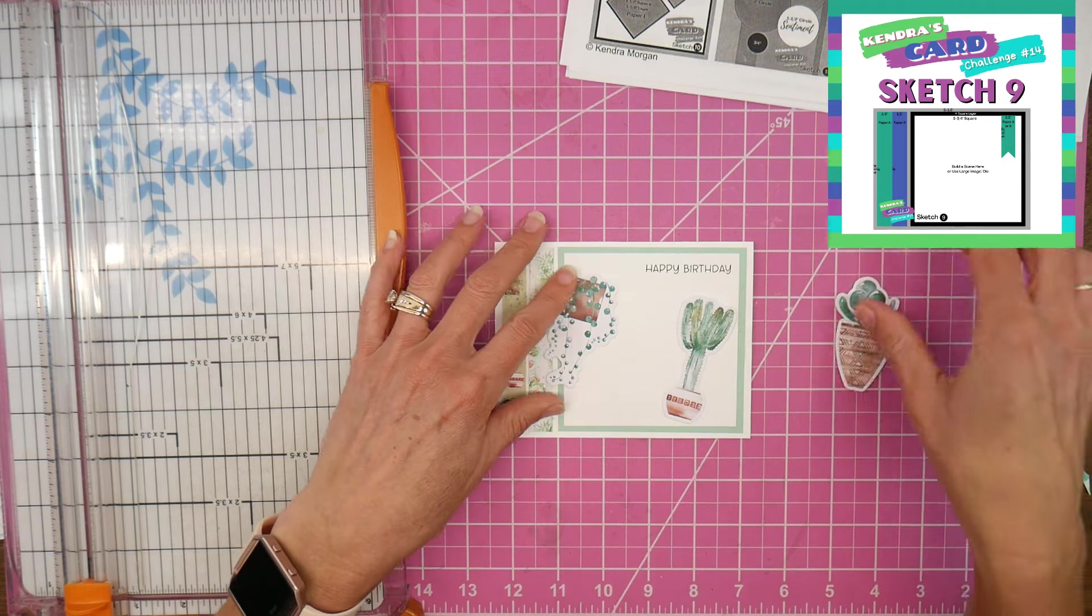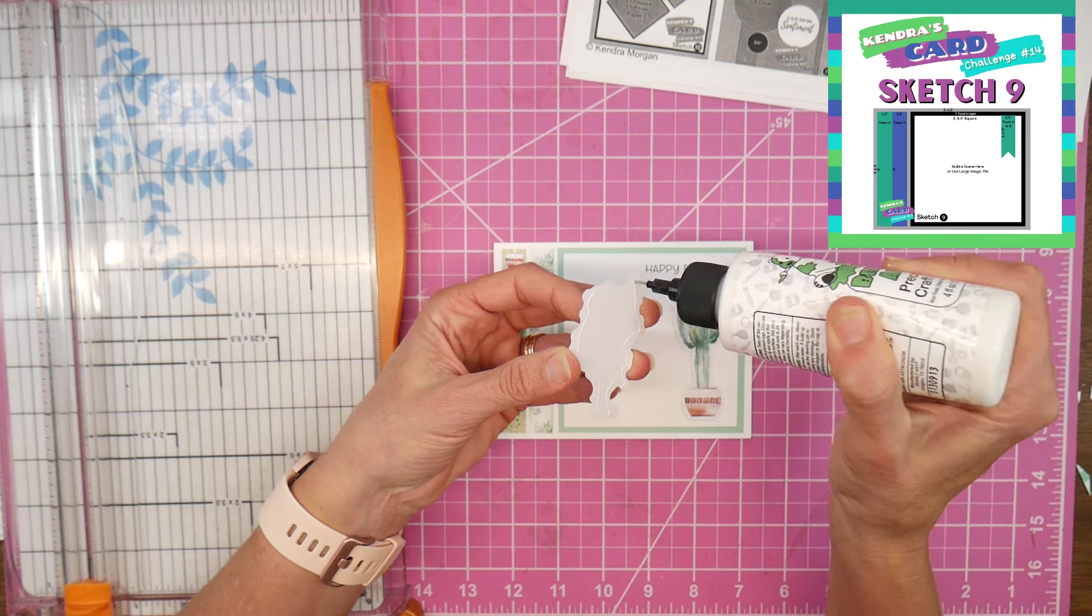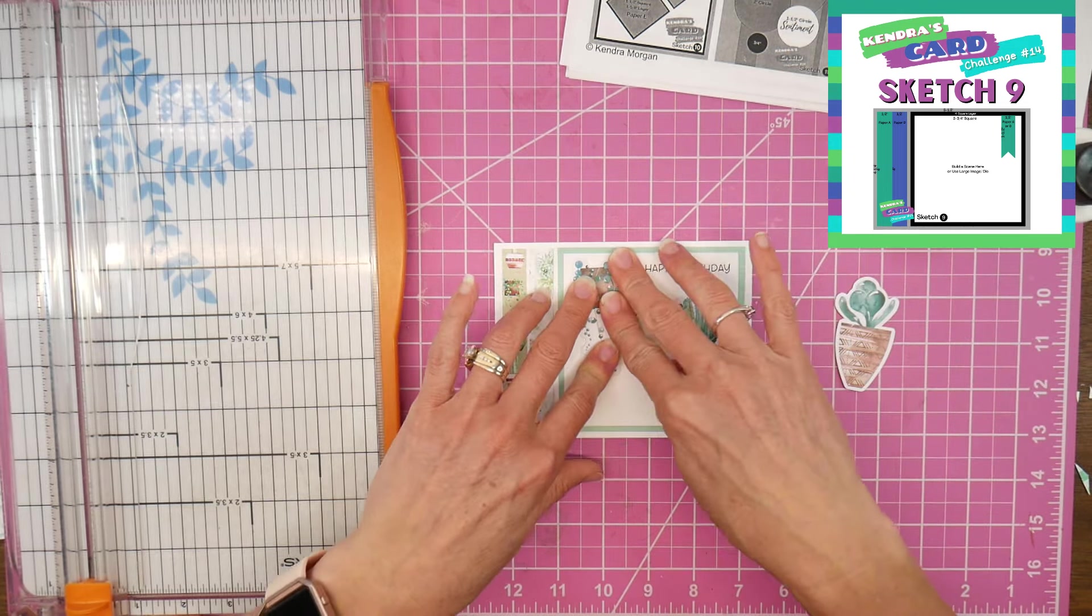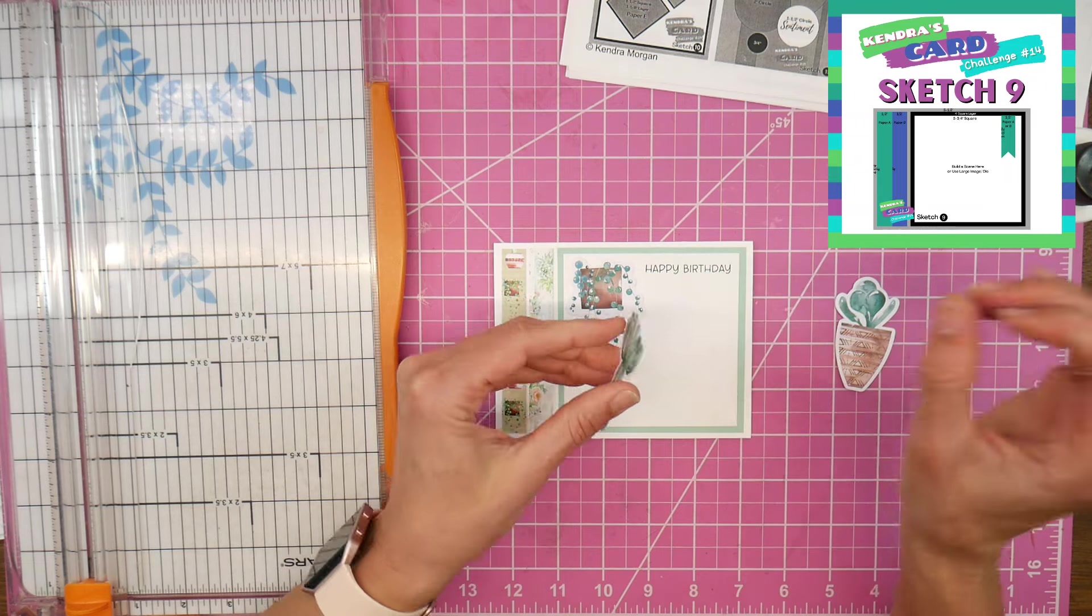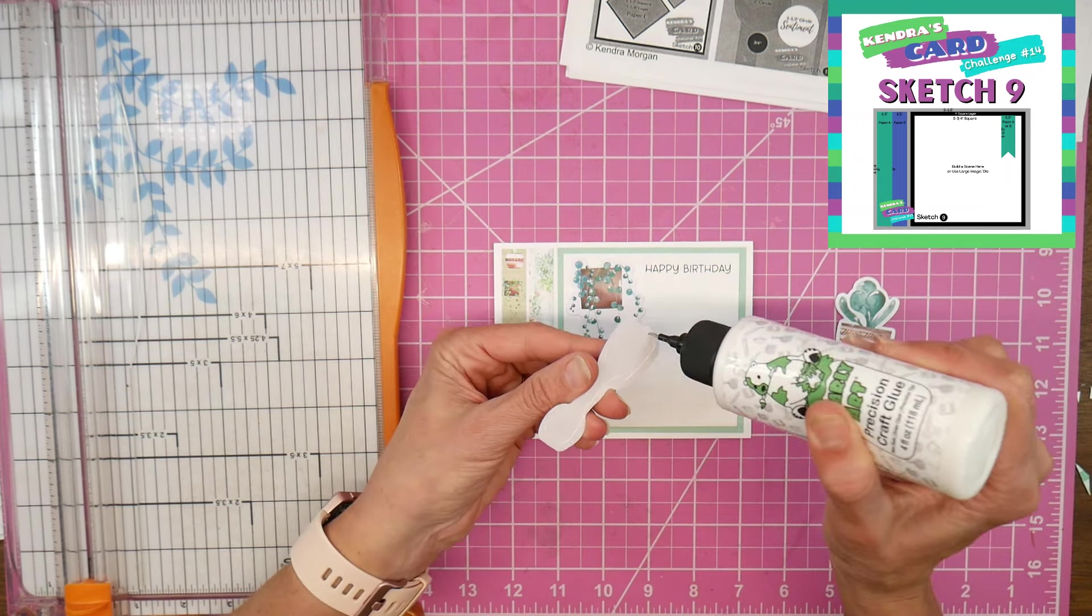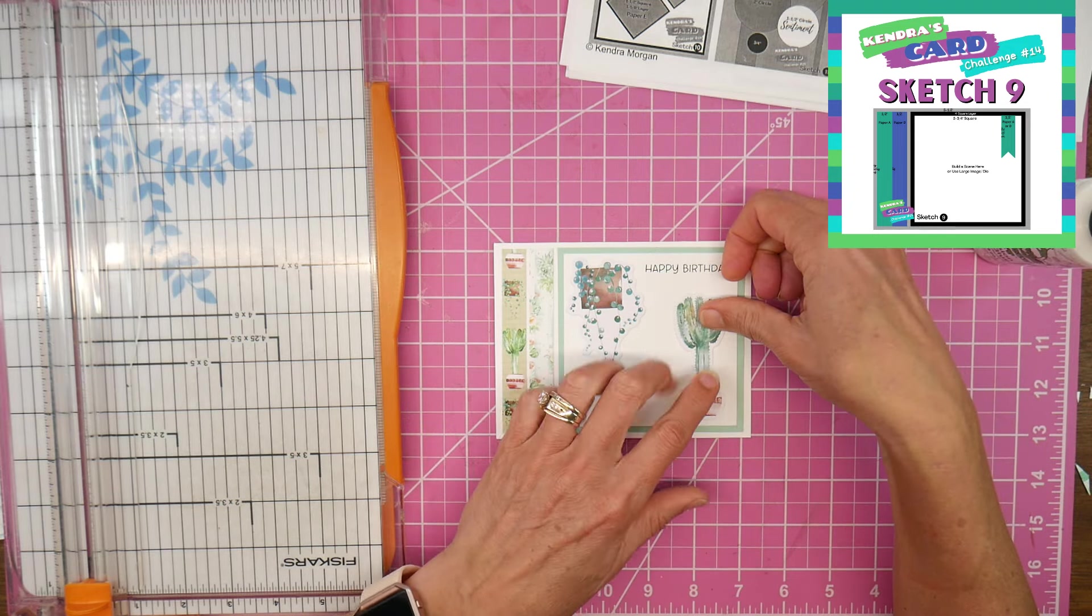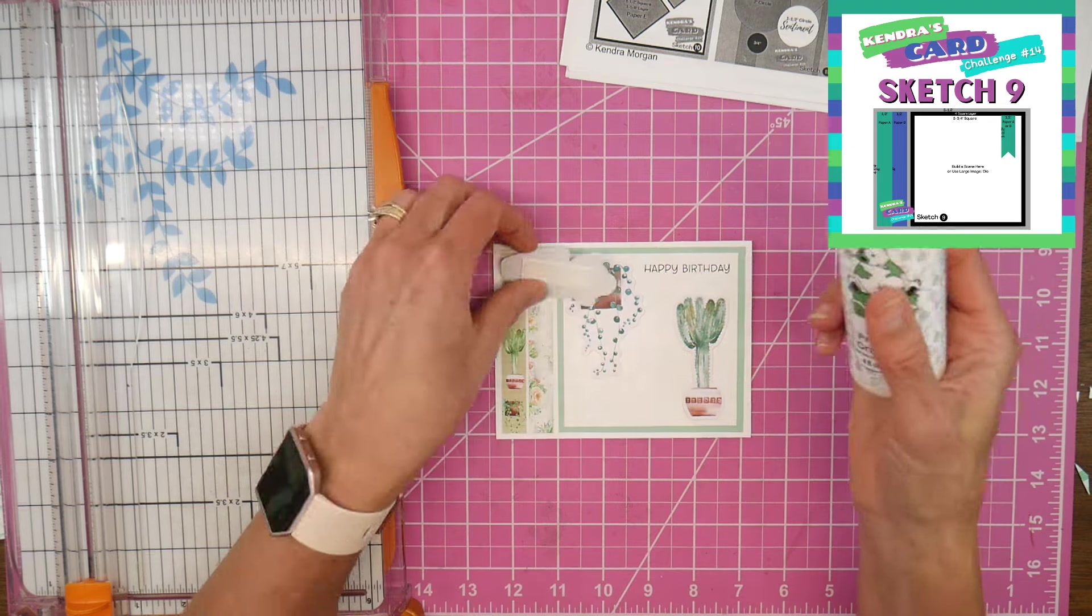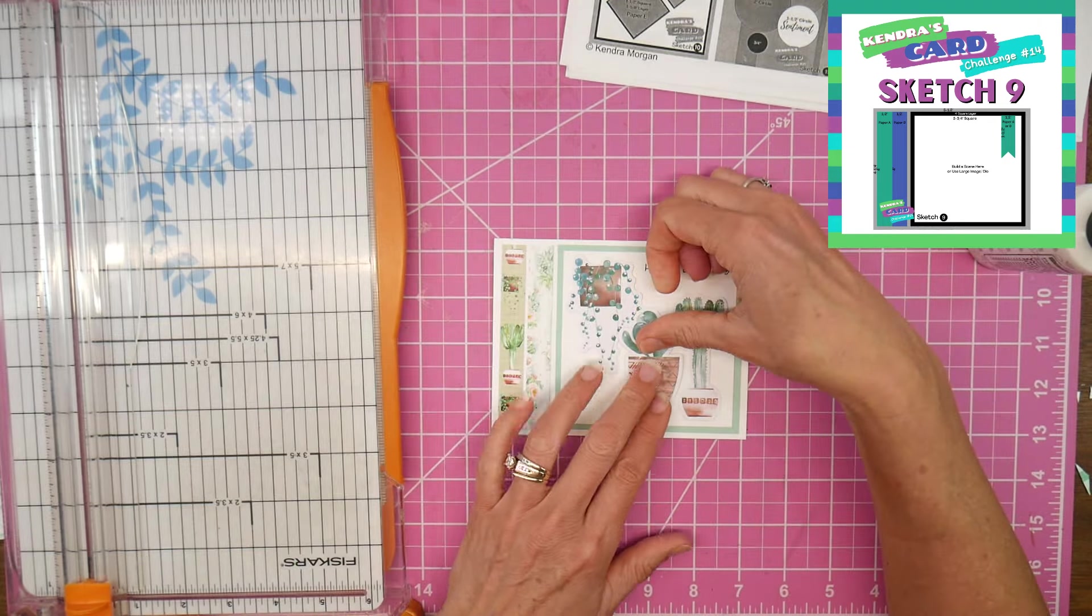And then I decided I wanted that middle succulent to be popped up just a little bit. So I'm going to glue that hanging succulent, or I'm going to say it's hanging, it could just be sitting on a shelf and dangling I guess, but I'm going to count it as a hanging succulent. And then I'm going to do that taller one on the right, and then I will do that succulent with the pot right there in the center, and it'll kind of be popped up a little bit to sit in front of both of the other ones.